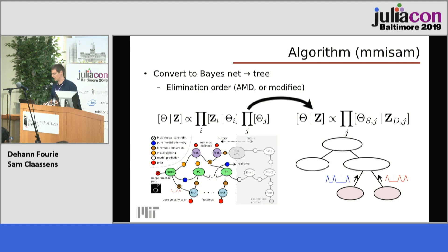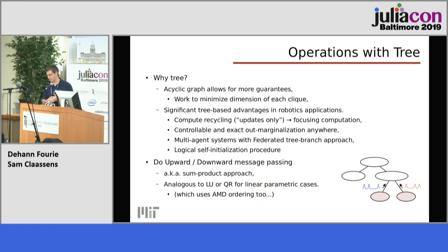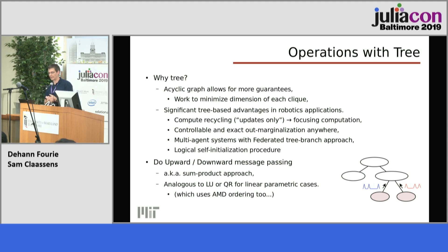The way we do it is we convert to a Bayes tree — also called a junction tree or elimination tree. We call it a Bayes tree because we do a few special tricks to it. We convert this problem algebraically through an elimination game using AMD ordering, then solve it. In robotics we can manipulate this tree for recycling computations, working with multiple robots, accurate marginalization, and accurate variable initialization. Working with these graphical structures replaces matrix-based methods. The tree solving — message passing from the leaves up to a root and back down — is the same as LU and QR decomposition in the more general non-linear, non-Gaussian fashion.